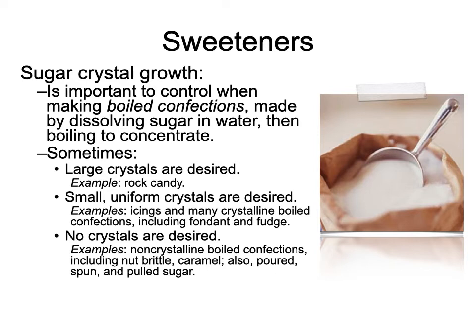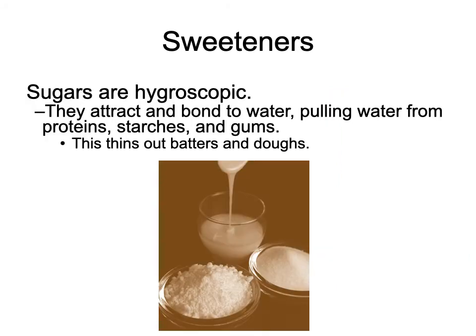Non-crystalline boiled confections include peanut brittle, caramel, and poured, spun, and pulled sugars — intentionally made with no crystals at all. All sugars are hygroscopic, meaning they attract and bond to water, pulling water from other things too. In a high-sugar product like a muffin, the sugar grabs onto moisture and sucks it out of other ingredients — this helps retain moisture in the muffin but also means other things start to dry out.